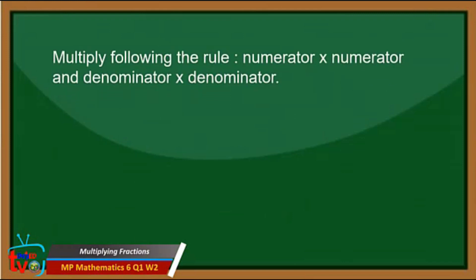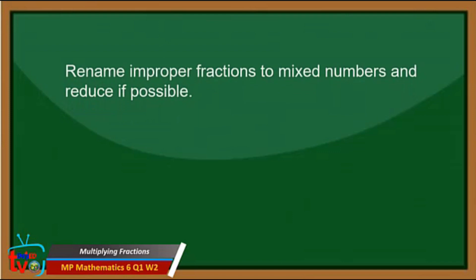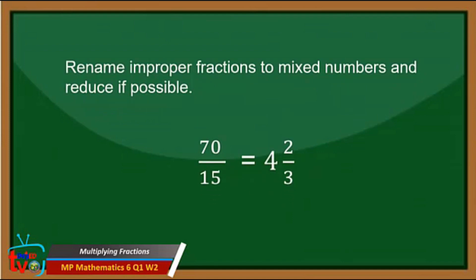When the mixed numbers are renamed into improper fractions, you are now ready to multiply following the rule: numerator times numerator and denominator times denominator. So 14 over 5 times 5 over 3. 14 times 5 is equal to 70, and 5 times 3 is equal to 15. So the product is 70 over 15, which is an improper fraction. Change the improper fraction into a mixed number by dividing: 70 divided by 15 is equal to 4 and 2 thirds.